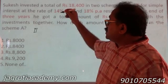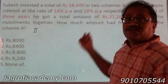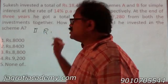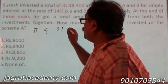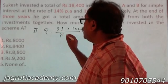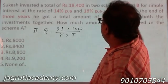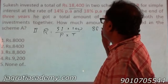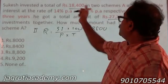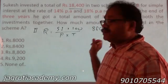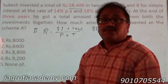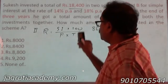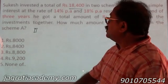In Method 2, scheme A gives 14% interest and scheme B gives 18% interest. We first find the overall rate of interest using the formula R = SI × 100 / (P × T). The SI is amount minus sum, which was 8,880. The total principal P is 18,400 and T is 3 years. Using these figures I can get the overall rate of interest.